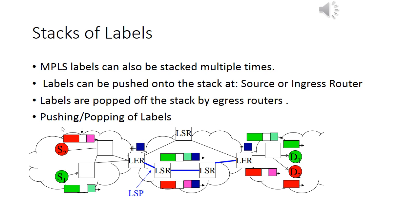MPLS has the feature of stacking labels multiple times. Labels are pushed onto the stack at the source or ingress router and popped off at the egress router. The diagram shows the popping and pushing of labels.